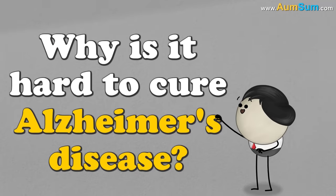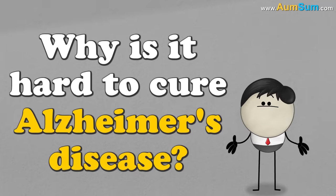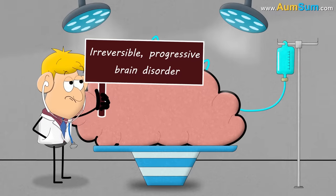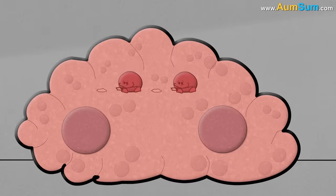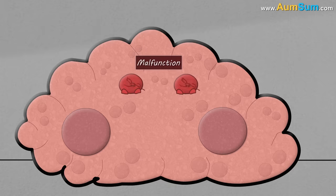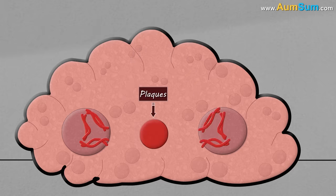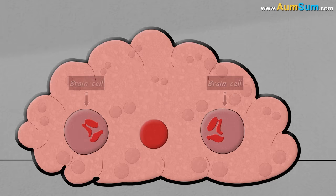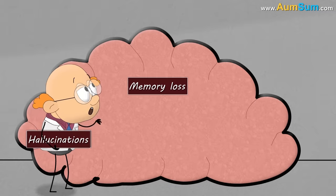Why is it hard to cure Alzheimer's disease? Alzheimer's disease is an irreversible progressive brain disorder. It basically occurs when proteins in the brain malfunction and clump together forming plaques and tangles. These plaques and tangles block communication between brain cells and even cause cell death, thus leading to memory loss.